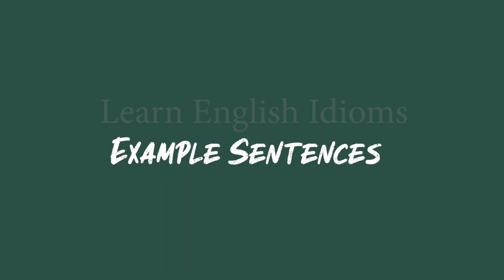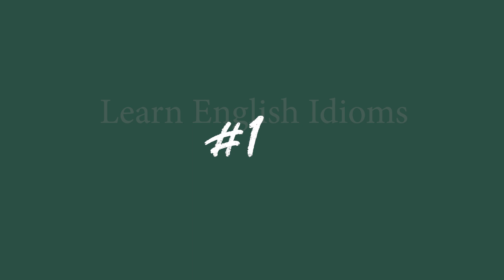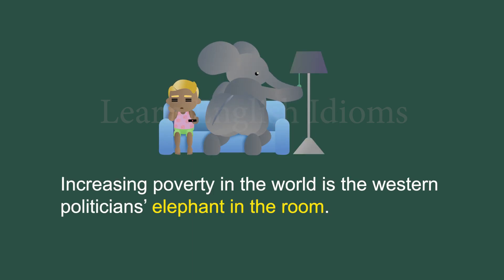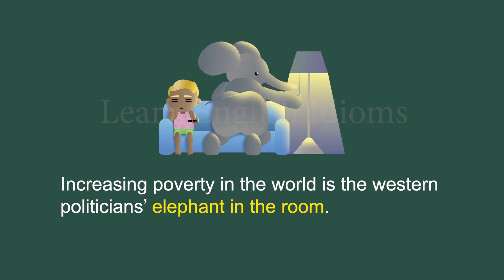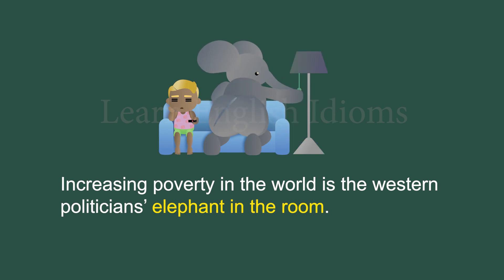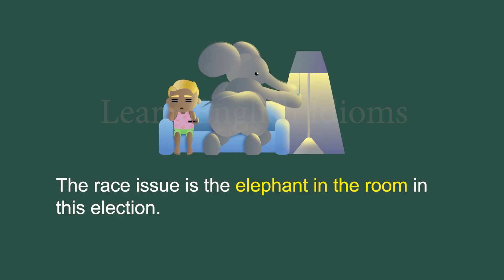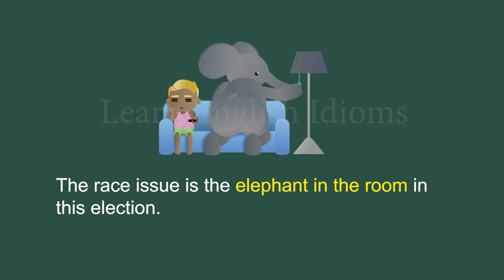Example sentences. The first example: Increasing poverty in the world is the Western politician's elephant in the room. The second example: The race issue is the elephant in the room in this election.